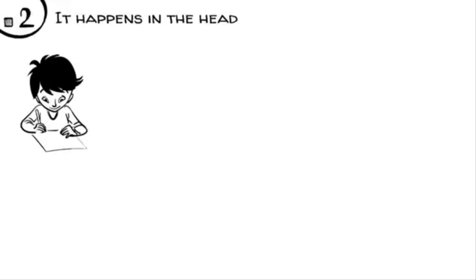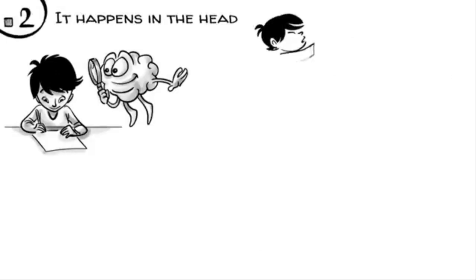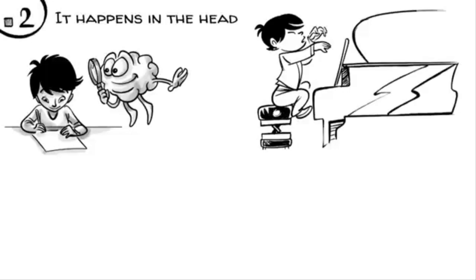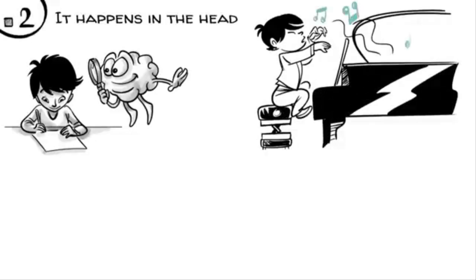It happens in the head. Whatever is on paper is merely a representation of mathematical thinking that happens in the brain. Just like musical notes, what is on paper is just a representation of music that actually happens when someone plays the piano.